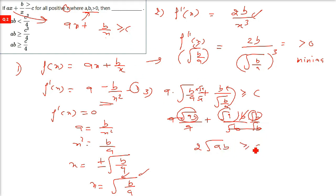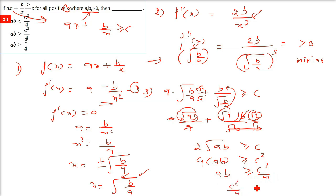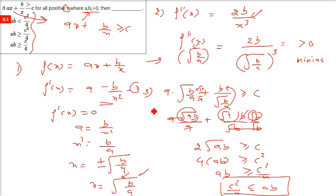So we get 2 times square root of ab, which is greater than or equal to c. Squaring both sides: 4ab is greater than or equal to c squared, so ab is greater than or equal to c squared by 4. Looking at the options, this exactly matches option 2: c²/4 is less than or equal to ab, or equivalently ab is greater than or equal to c²/4. That is the final answer.